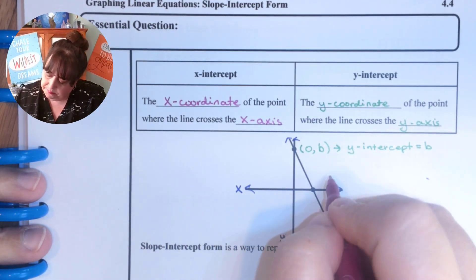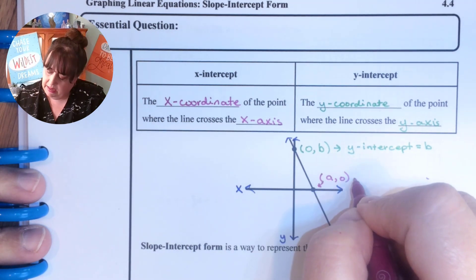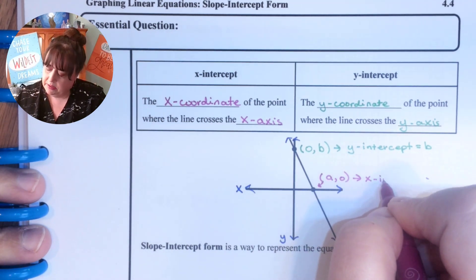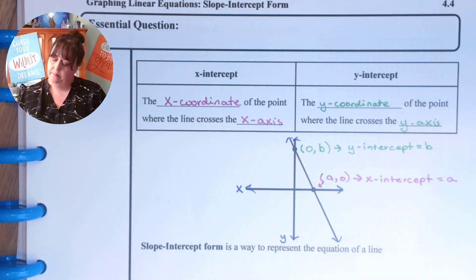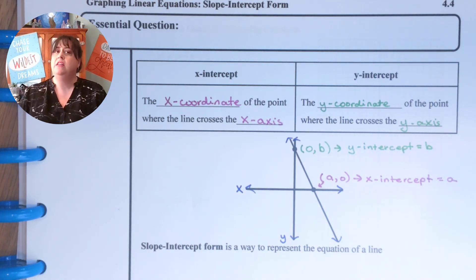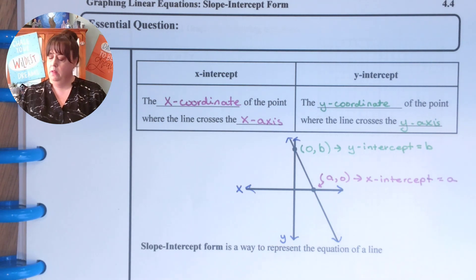And then this one right here is (a, 0) and it is your x-intercept and it's equal to a. We use it but not as often as we use the y-intercept. The y-intercept is one we use all the time.